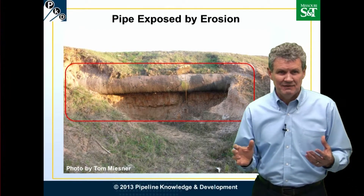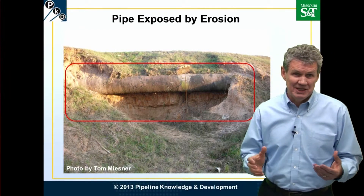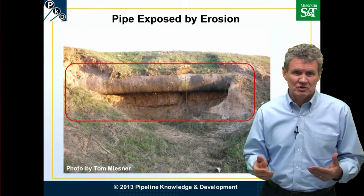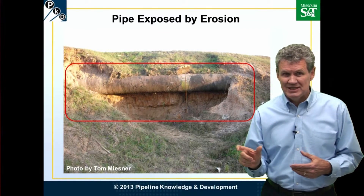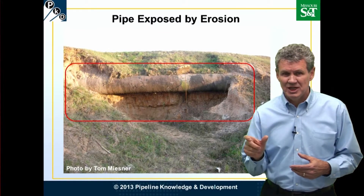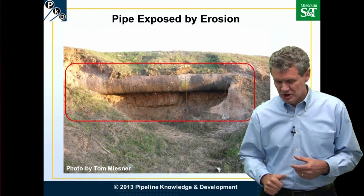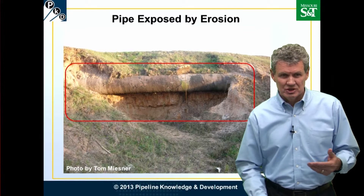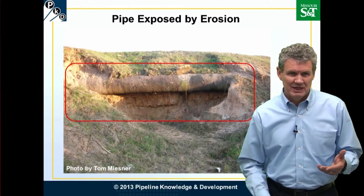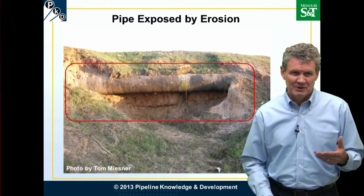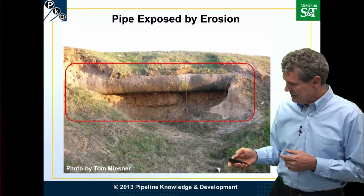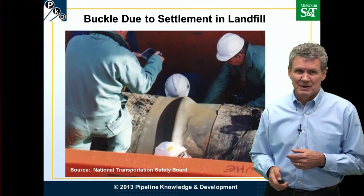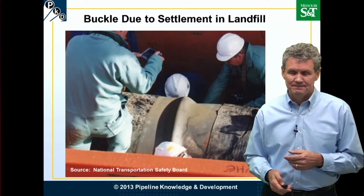You need to take mitigative actions — maybe dig it up, relieve the stress, and come back and put strain gauges on it that you check periodically to make sure you know what the strain and stress is on this pipeline. This is pipe exposed by erosion.